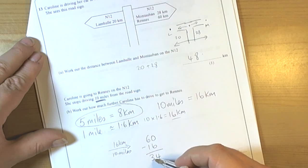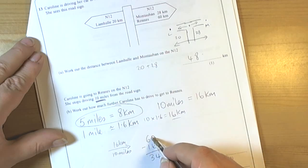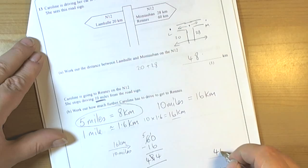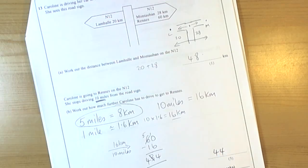Which will leave us with 34. Let's check and add back: 4, 6 is 10, carry the 1, 3, 1... no, we've made a slight mistake there. Borrow a 10, so 10 take away 6 is 4, 5 take away 1 is also 4. So the final answer will be 44 kilometres.